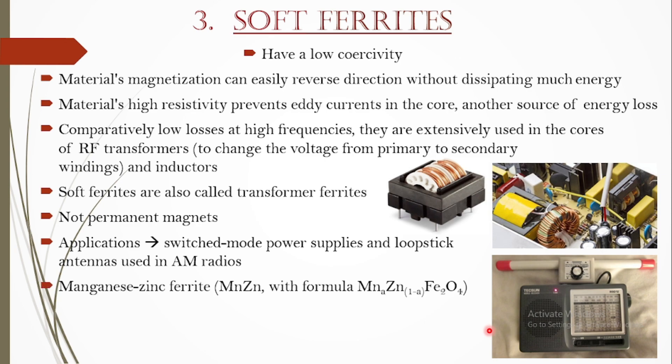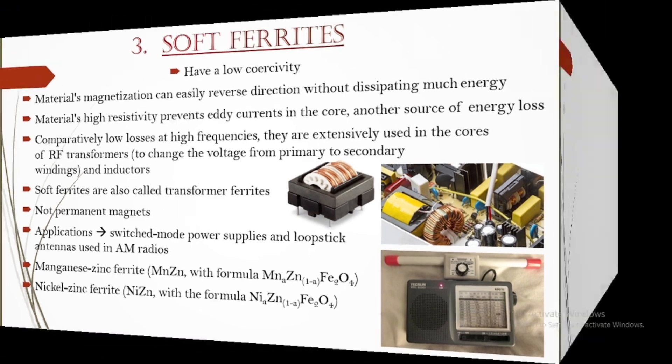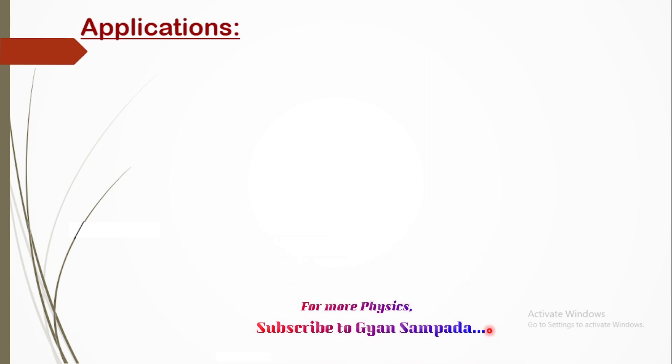Some examples of soft ferrites are manganese zinc ferrite and nickel zinc ferrite. Finally, ferrite compounds are extremely low cost since they are made mostly with iron oxide, and they also have excellent corrosion resistance, so they do not get easily corroded, which makes their life longer.